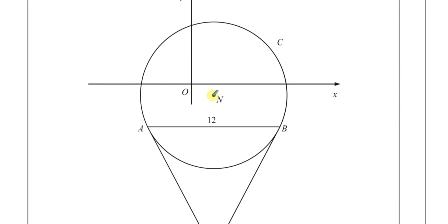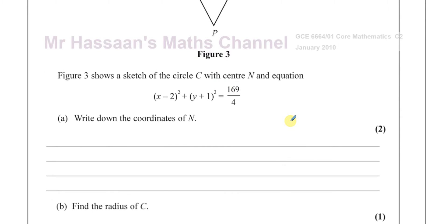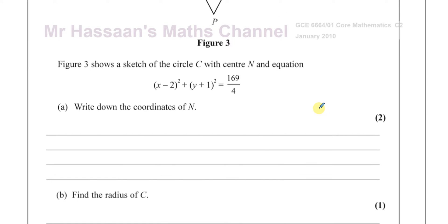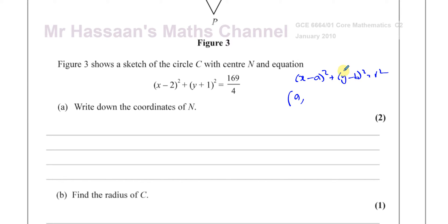N is the center of the circle and the equation of the circle is given. We should know how to find the center and also the radius from its equation. If it's written in the standard form (x−a)² + (y−b)² = r², then the x-coordinate of the center is the value of x that makes the first bracket zero, which is a, and the y-coordinate is the value that makes the second bracket zero, which is b. The radius is the square root of r².